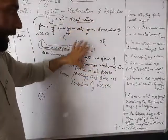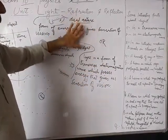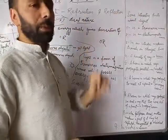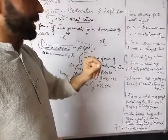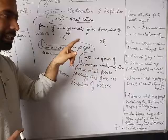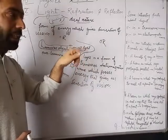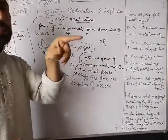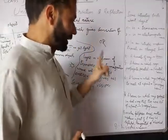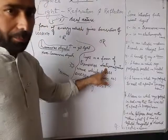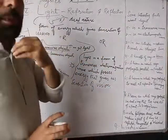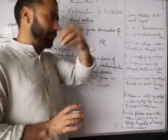Light is a form of energy that gives sensation of sight. Now there are some interesting facts about light which you should remember. The first fact: light is a transverse wave in which the photons — the particles — vibrate in the perpendicular direction to the direction of its propagation. The second fact: it is an electromagnetic wave, meaning it is that type of energy which does not need any material medium to propagate from one place to another.